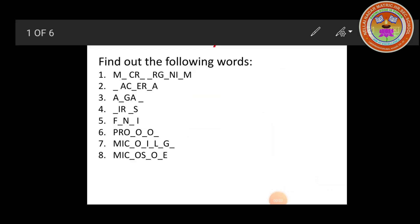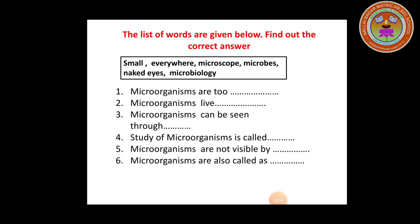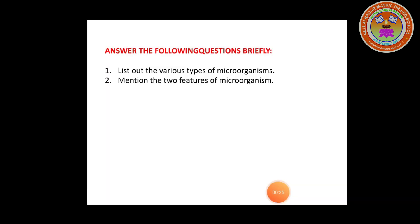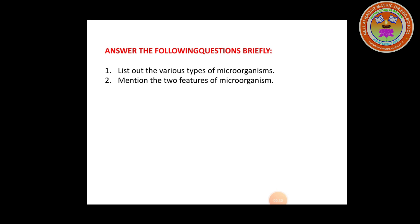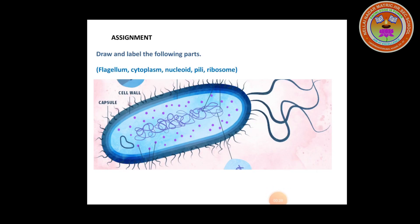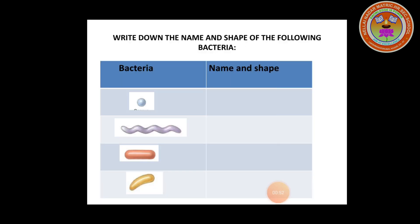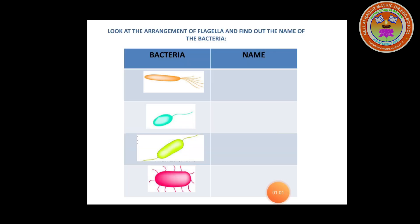After the class, I have given you a few exercises. There are eight words given with missing letters — find the letters and make the correct word. In exercise 2, find the correct words from the box and fill in the blanks. Try to answer: list the various types of microorganisms, and mention two features of microorganisms. A structure of a bacterial cell is given — draw and label the parts: flagellum, cytoplasm, nucleoid, pili, and ribosome. A table shows different shapes of bacteria — identify the correct shape. Four bacteria are given — by looking at the flagella, find their correct name.